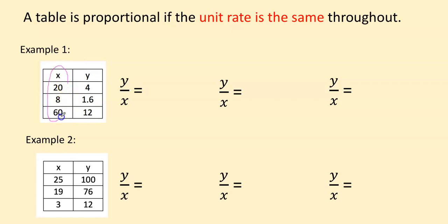And this whole column, those are the x's. This whole column, these are the y's. So we need to make sure that the first y we plug in is 4 and the first x we plug in is 20. And I'm letting you use your calculator today. So 4 divided by 20, we get 0.2 or 0.2.